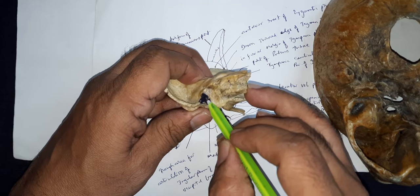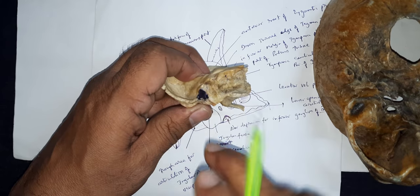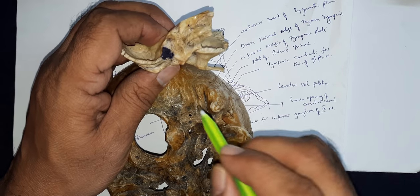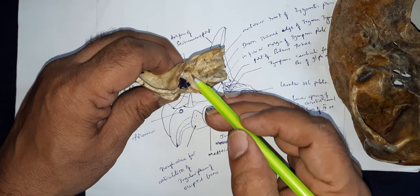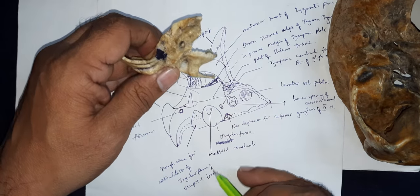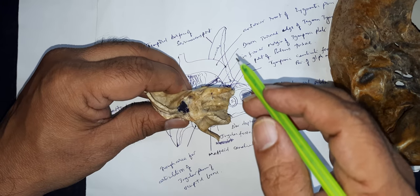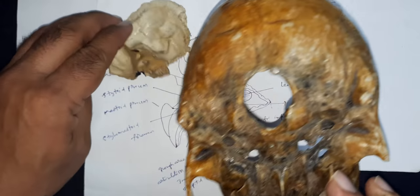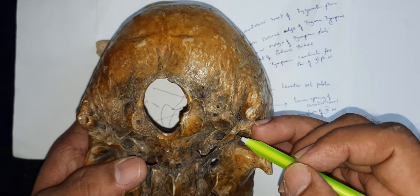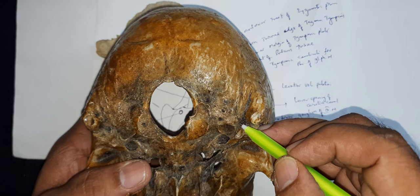Behind that, this inferior margin splits to enclose the styloid process — it is absent in this bone because somebody has broken it. Behind the styloid process, there is a triangular rough area for articulation with the jugular process. You can see in this articulated skull: this is the occipital bone with its jugular process, and the jugular process is joining the petrous temporal here.